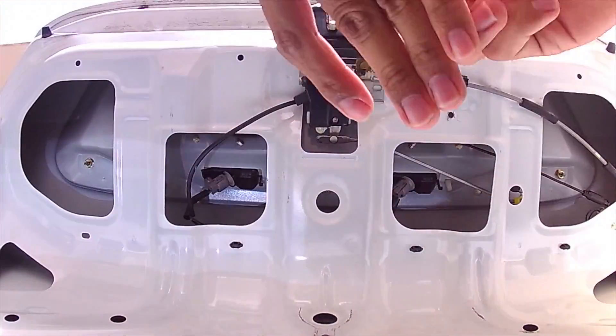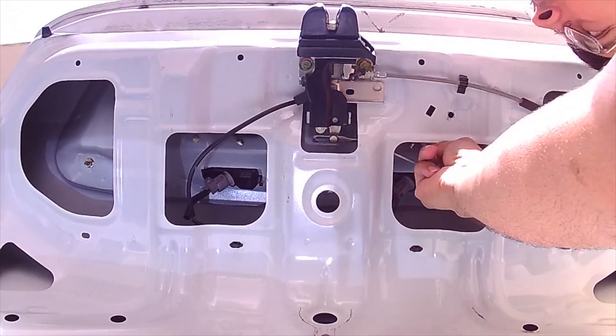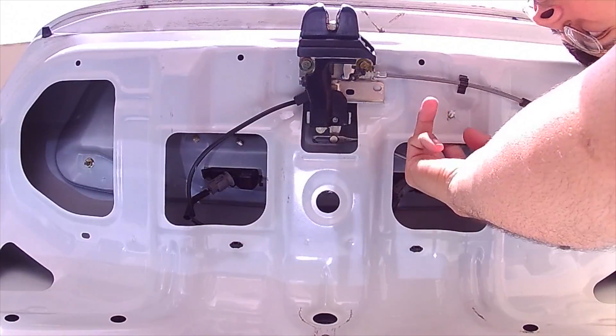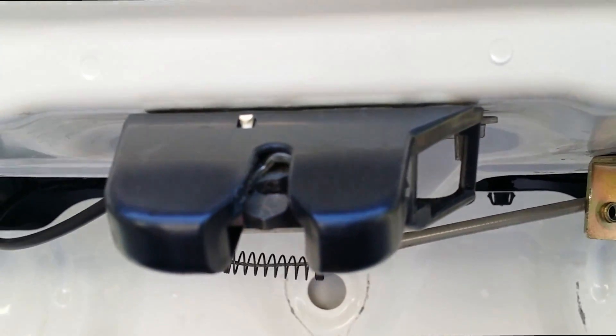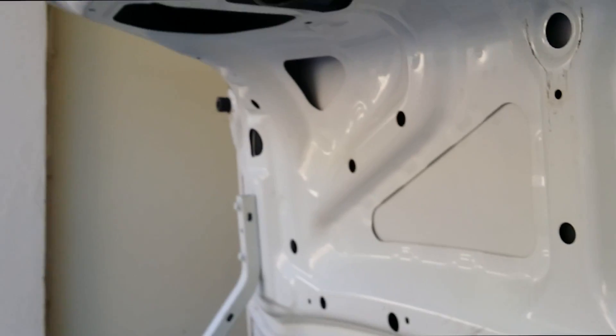Once done, use the included nuts, washers and bolts to secure the bracket in place. Make sure to understand how the existing trunk lock works in order to know how to set up the solenoid properly.